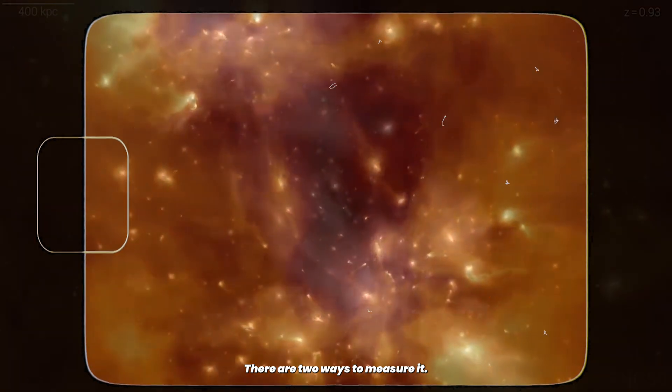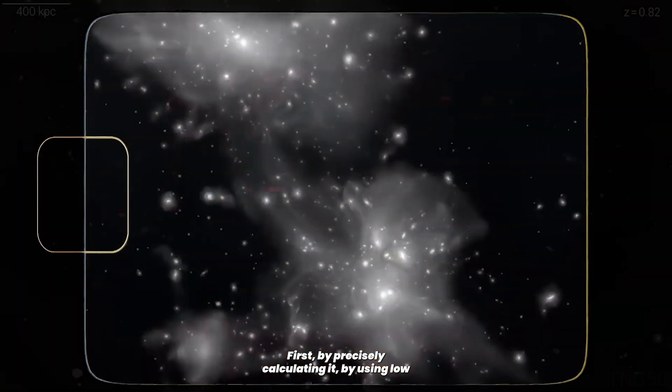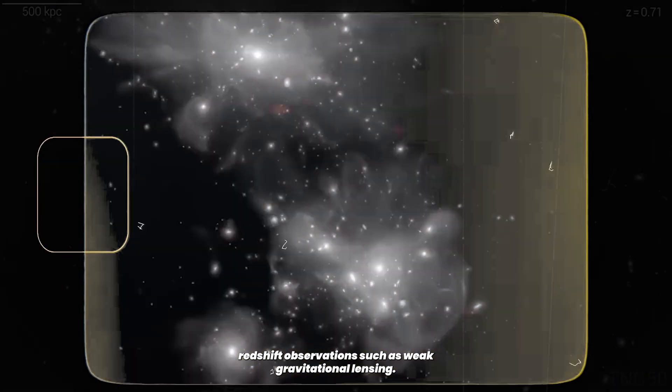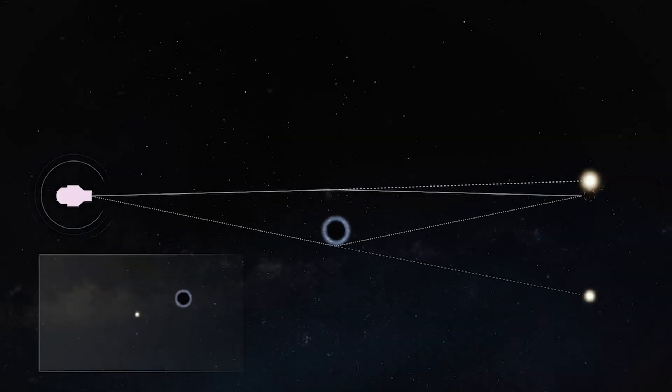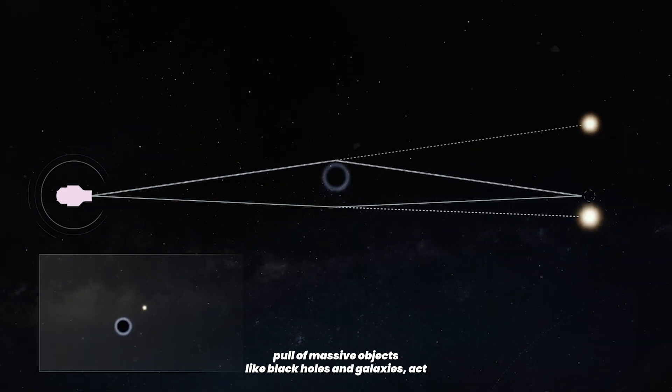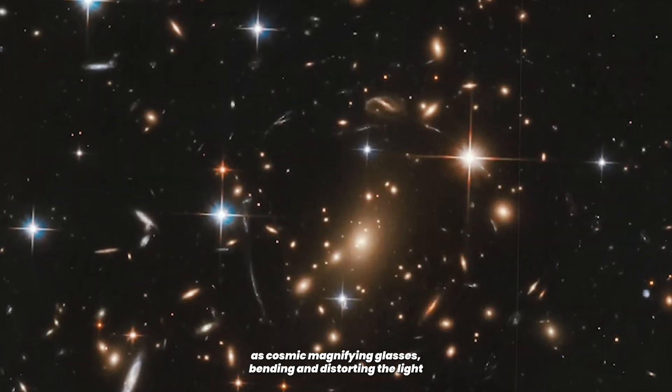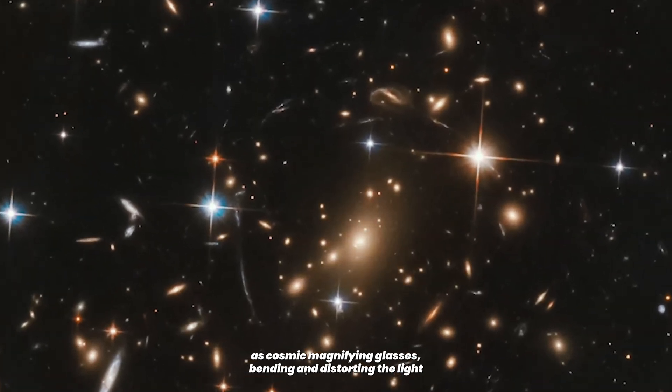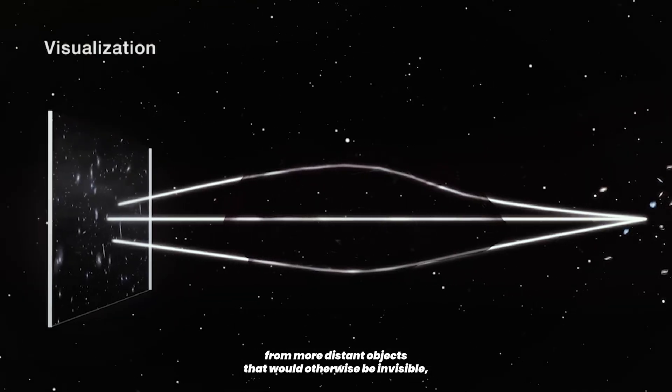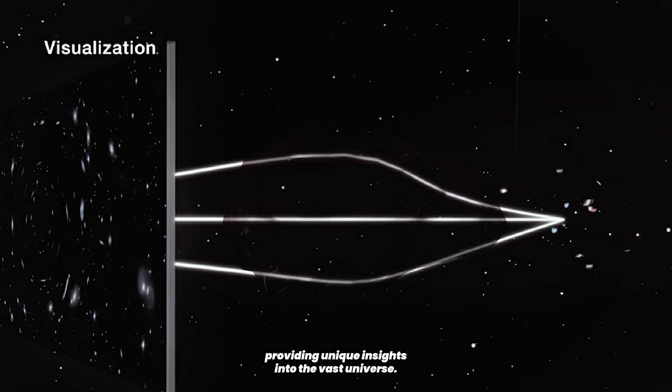There are two ways to measure it. First, by precisely calculating it by using low redshift observations, such as weak gravitational lensing. Gravitational lensing is a phenomenon where the immense gravitational pull of massive objects like black holes and galaxies act as cosmic magnifying glasses, bending and distorting the light from more distant objects that would otherwise be invisible, providing unique insights into the vast universe.